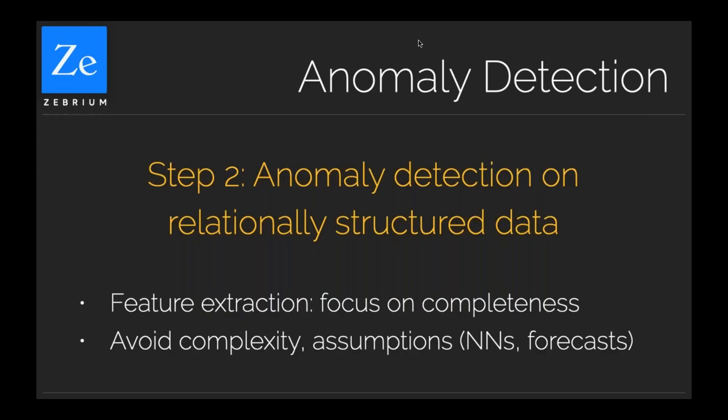Step two is anomaly detection on this data. Remember the pyramid: we started with collection and structuring, now we're in anomaly detection. Our goal is different from most anomaly detectors — we want to make sure we capture anything that is even remotely anomalous because we're not afraid of being verbose. We want to capture all the signal we can, because this supports our next layer, which is incident detection. You can think of the anomalies as features you're extracting from the data, with an eye towards creating the incidents. For example, we catalog all local minima and maxima of a metric and its first derivatives so we can later see whether those correlate with anomalies in our log streams.